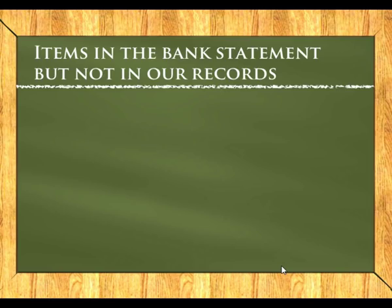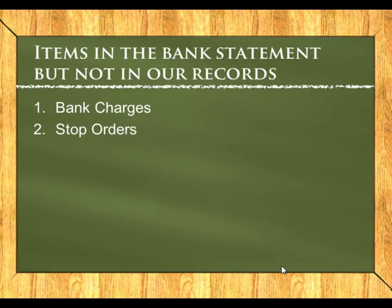We also have a list of items which may appear on the bank statement but not on our records. The first one is bank charges — we'll only find out about this once the bank has charged us. Then we have stop orders. A stop order is an instruction to the bank to pay a specified amount to a specified person on a specified date. An example of that would be insurance: we know who we need to pay, we know on which date, and we know the amount. Unfortunately, we only see that transaction through the bank statement once it has actually occurred.